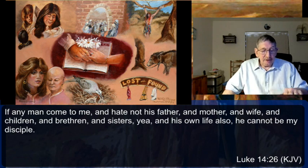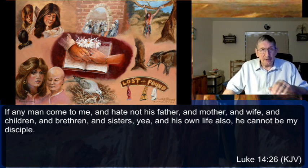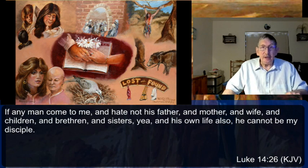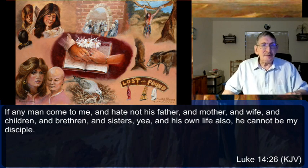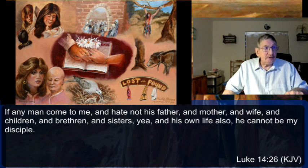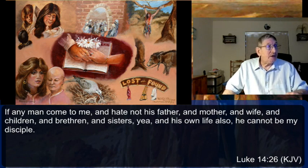Jacob is a definite example — even though Joseph was the firstborn of his favorite wife Rachel, the inheritance was to be divided according to the law. Reuben was the actual firstborn, but he committed a sin worthy of losing his double portion by defiling his father's bed. Jacob still identifies Reuben as his firstborn in Genesis 46:8, but Reuben does not seem to receive the double portion.